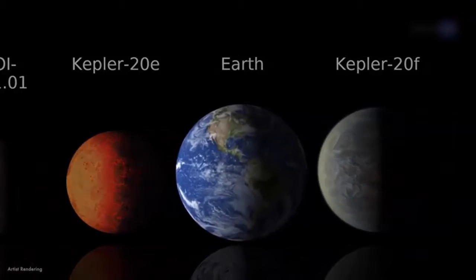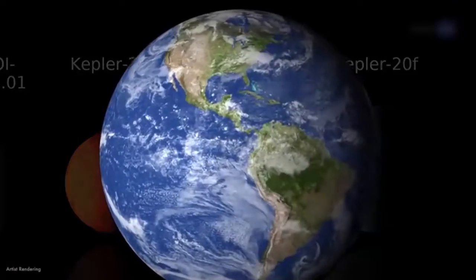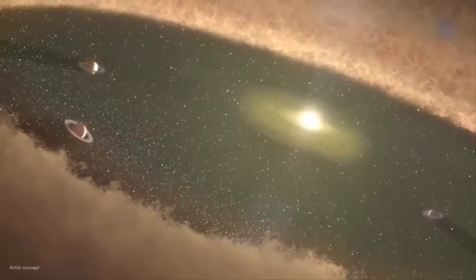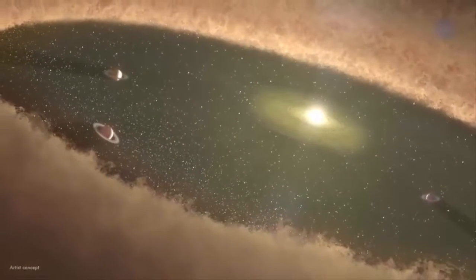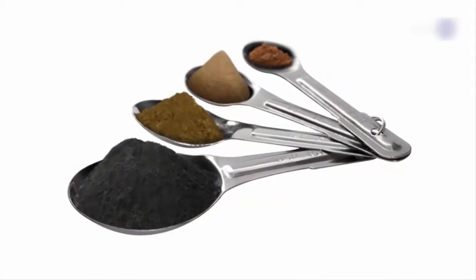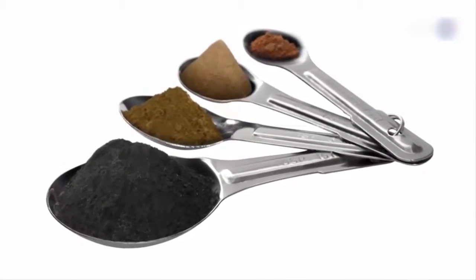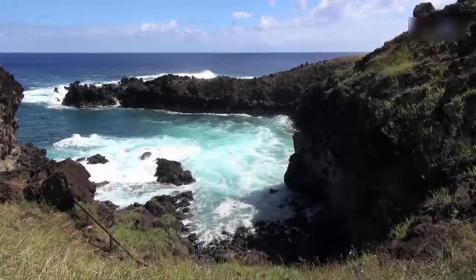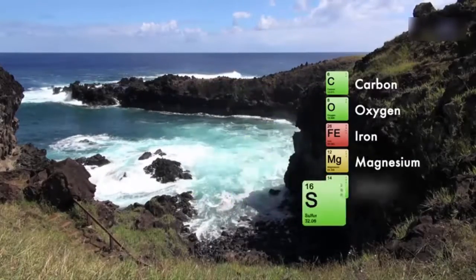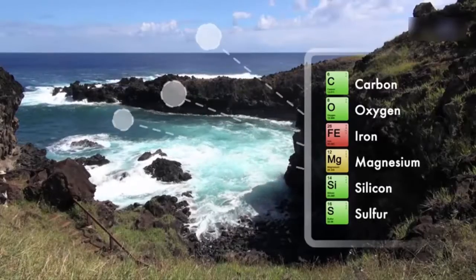In recent years, they've been finding other planets increasingly similar to Earth, but still none that appear as hospitable as our home world. For those researchers, the search goes on. Another group of researchers have taken an entirely different approach. Instead of looking for Earth-like planets, they've been looking for Earth-like ingredients. Consider the following: our planet is rich in elements such as carbon, oxygen, iron, magnesium, silicon, and sulfur—the stuff of rocks, air, oceans, and life.